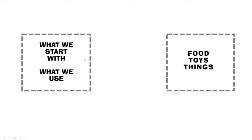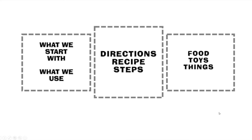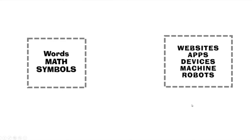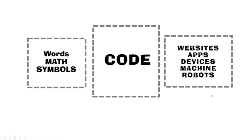First we have something that we start with and what we use, and we turn it into something that we want. We start using directions, recipes, steps. Similarly, in coding we're going to take words and math symbols and all that, and turn them into websites, apps, devices, machines, robots. And how do we do that? We use code.